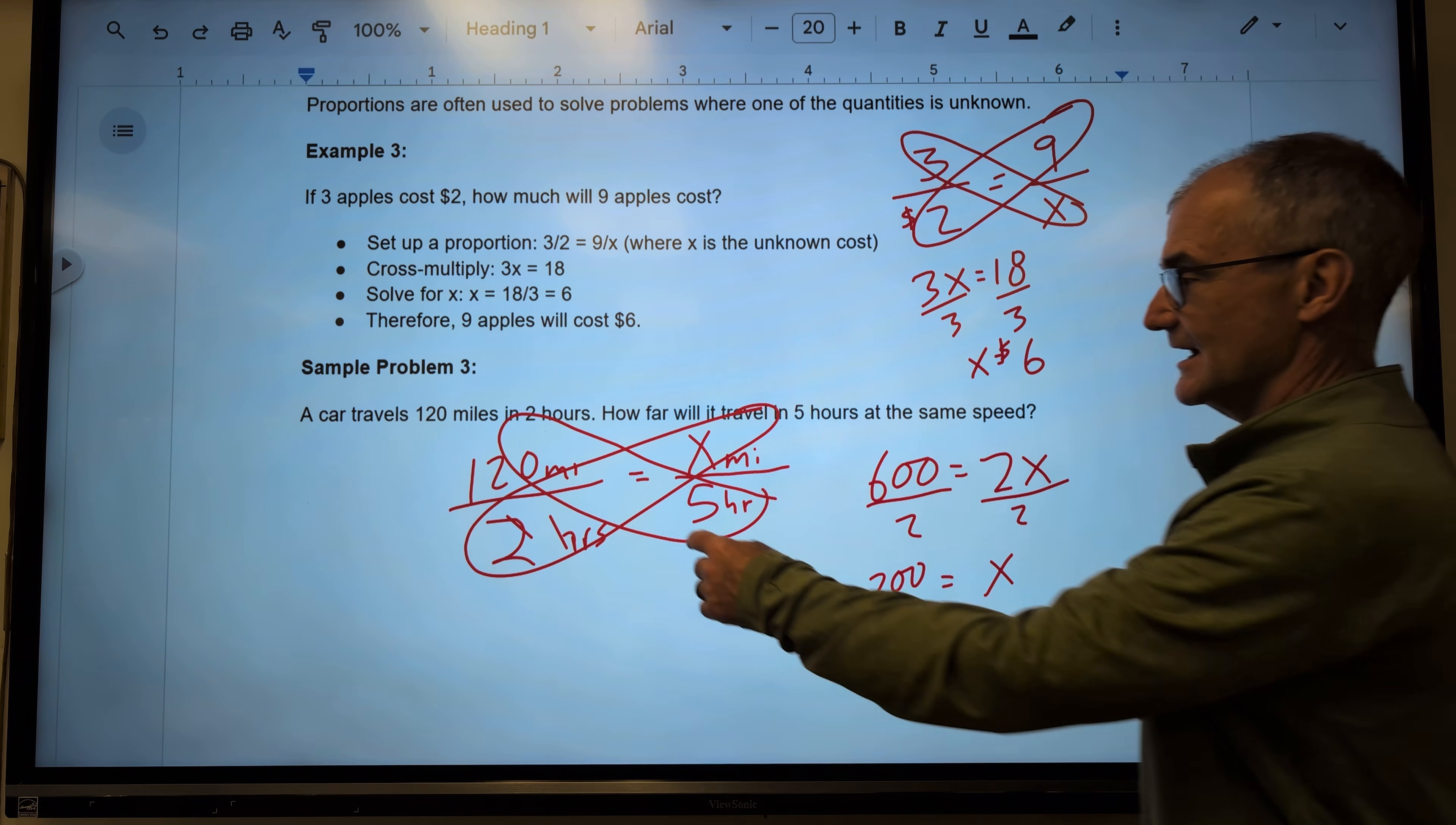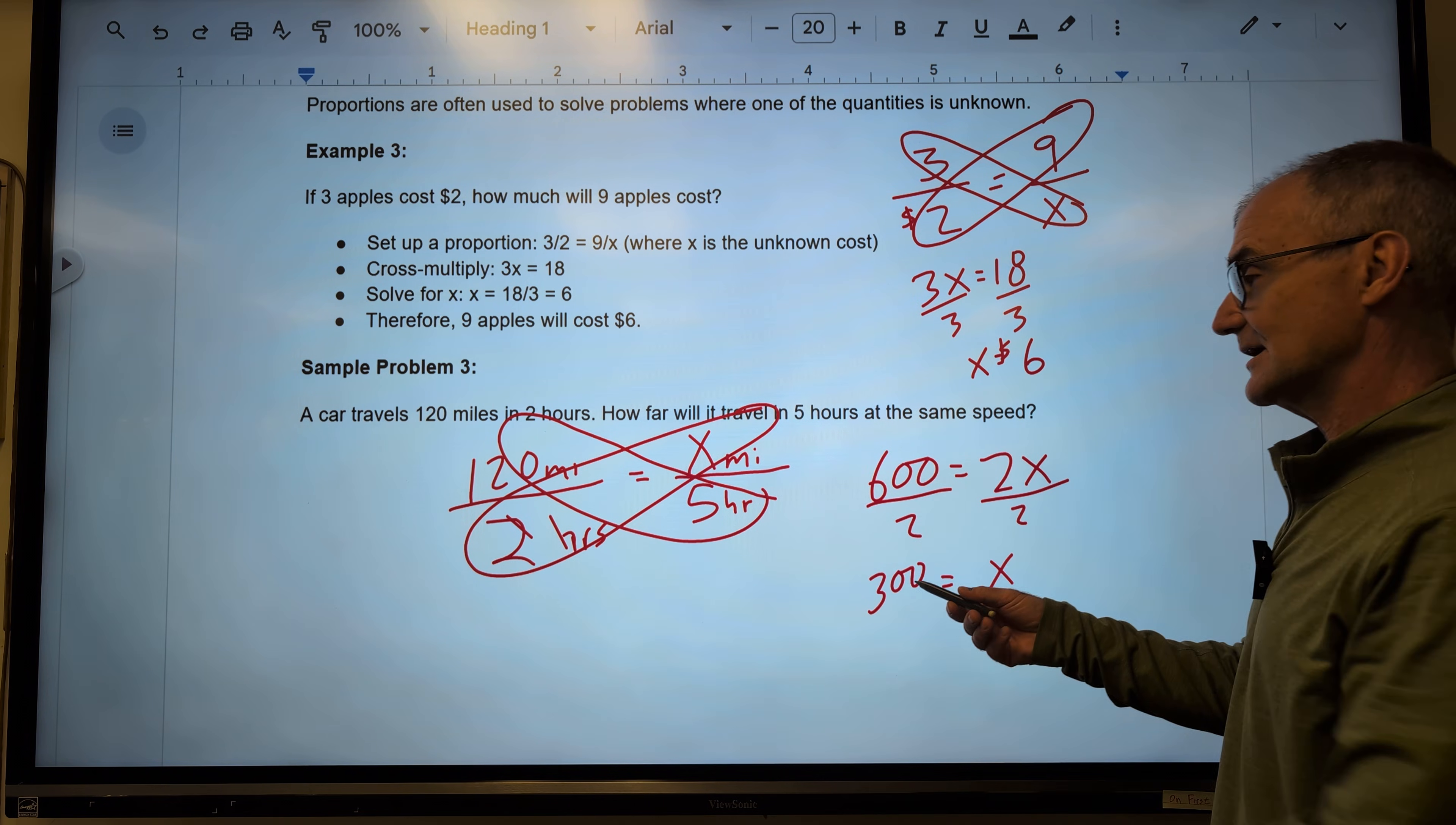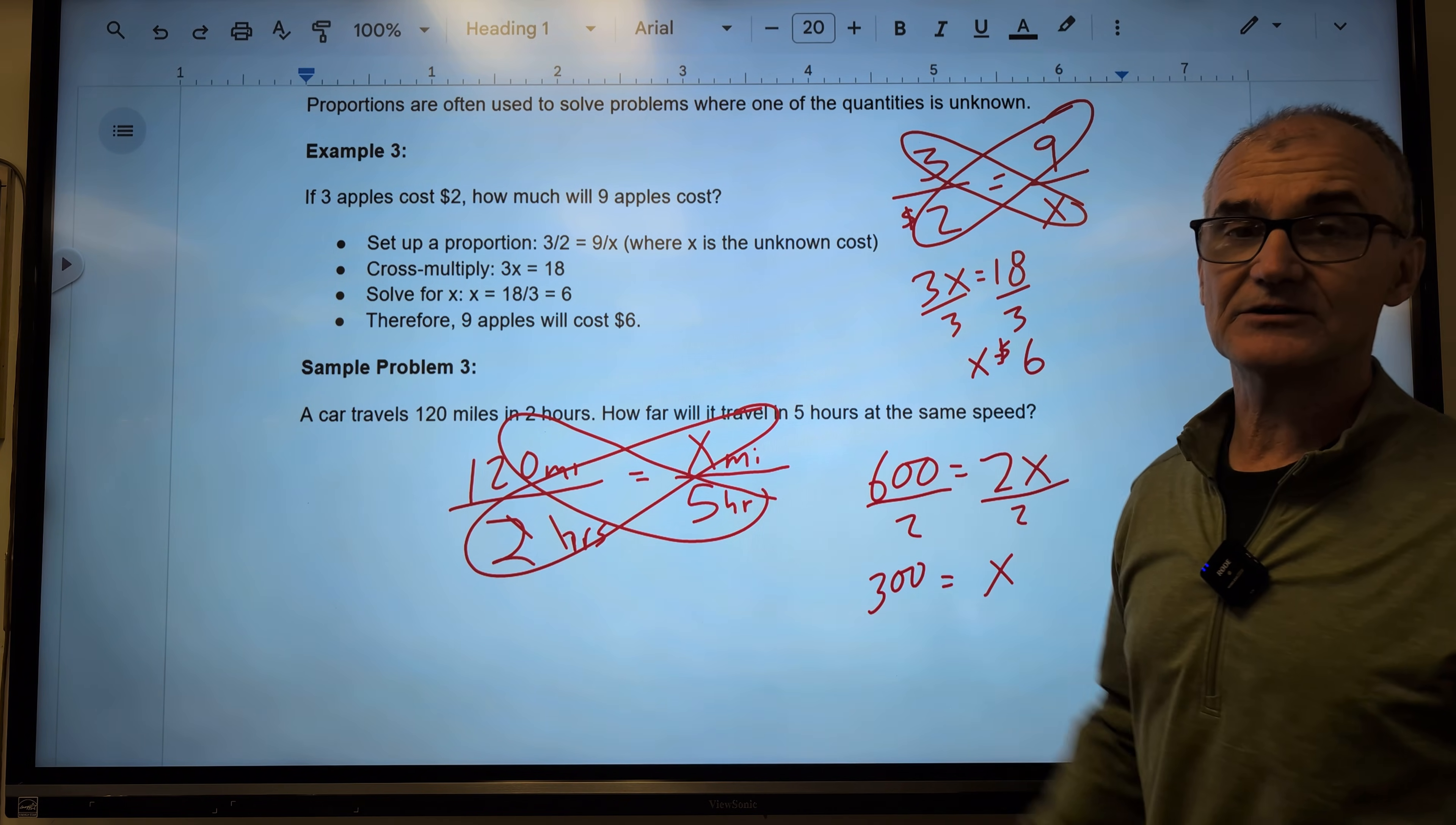So let's just double-check that. I drive 120 miles in 2 hours. Therefore, I drive 300 miles in 5 hours. If these ratios are equal, then it's a proportion, and I could solve for my unknown.